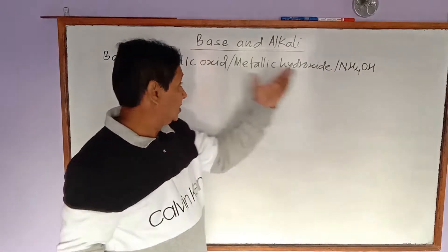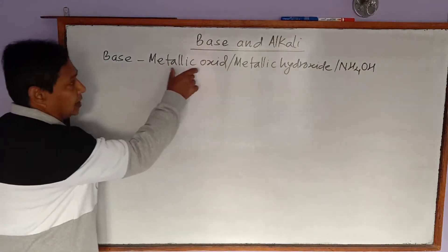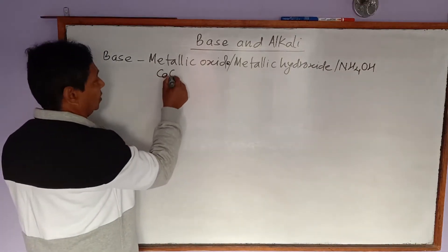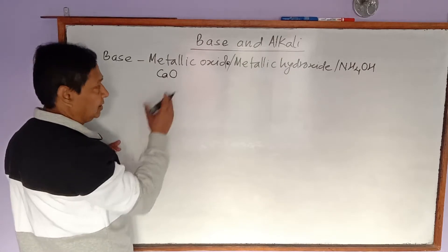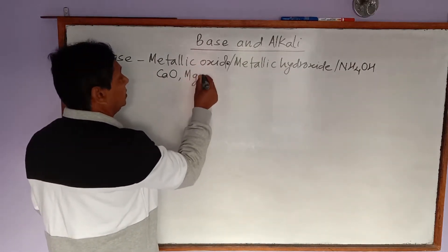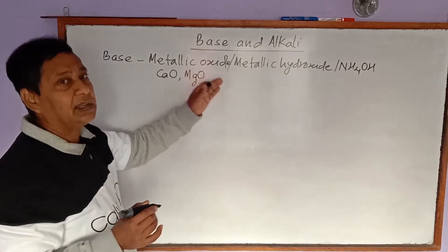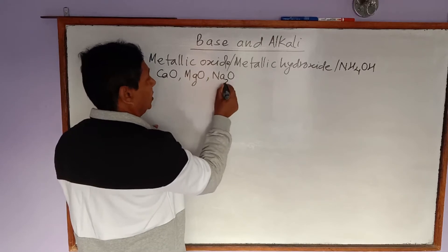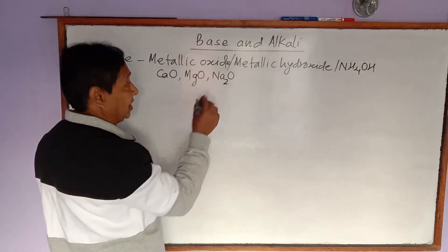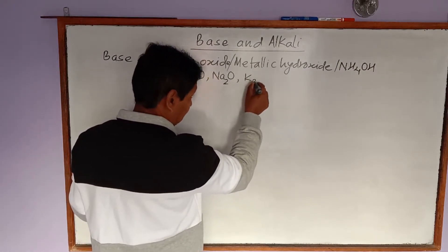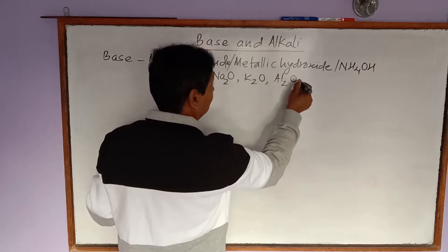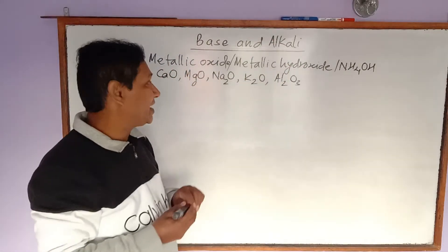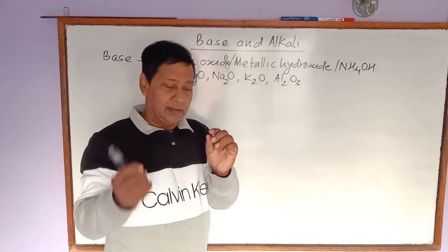What does metallic oxide mean? When a metal combines with oxygen, it forms a metallic oxide. For example, calcium oxide (CaO) is a metallic oxide and a base. Similarly, magnesium oxide (MgO), sodium oxide (Na₂O — since oxygen has valency 2 and sodium has valency 1), potassium oxide (K₂O), and aluminum oxide (Al₂O₃ — since aluminum has valency 3) are all metallic oxides and therefore all bases.